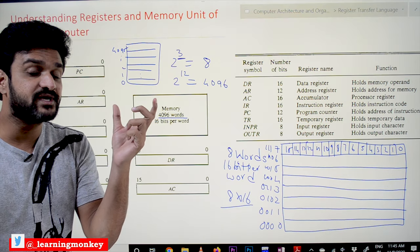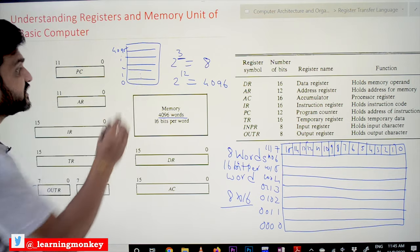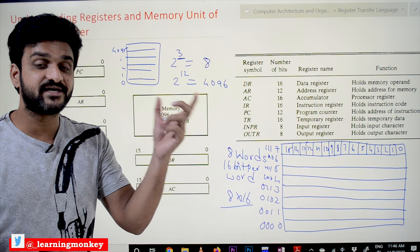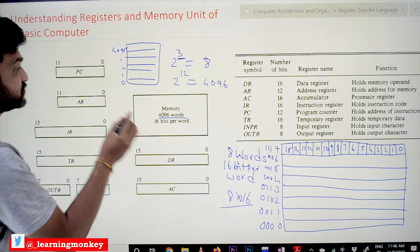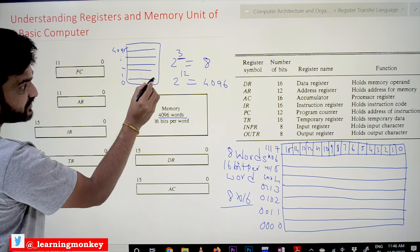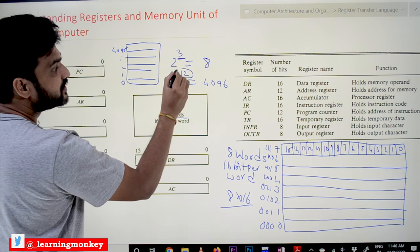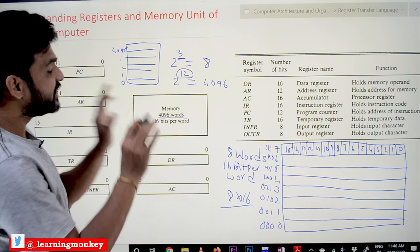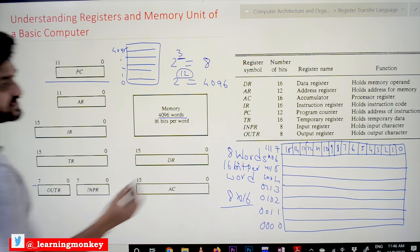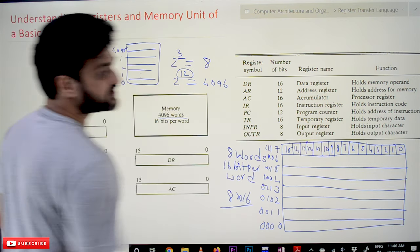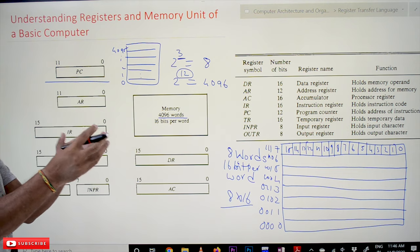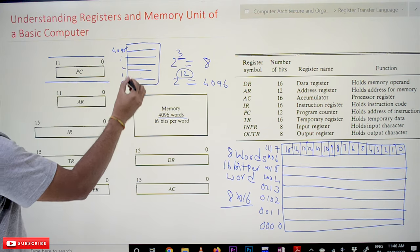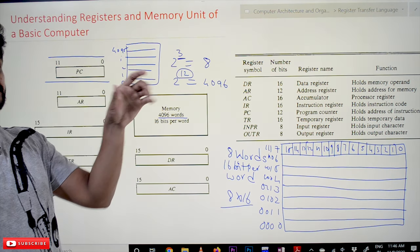The number of bits used to uniquely identify each and every word is what we call the address bit. The number of bits in the address are 12 bits. Each and every memory location is uniquely identified by using 12 bits. That is the reason why PC — program counter, which holds the address of an instruction — and address register, which holds the address of memory, both have a size of 12 bits, because all addresses are uniquely represented using 12 bits.